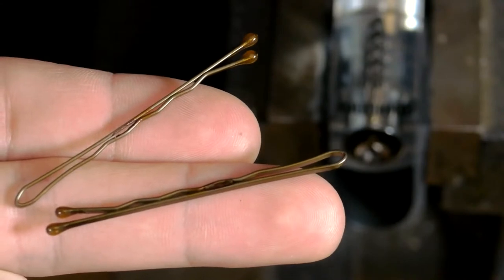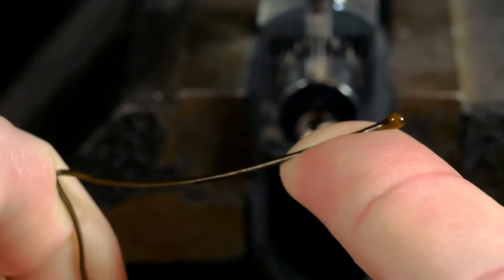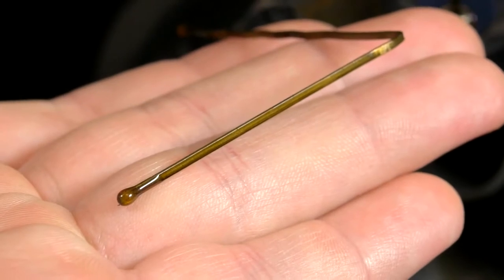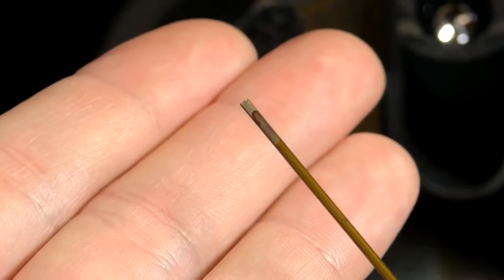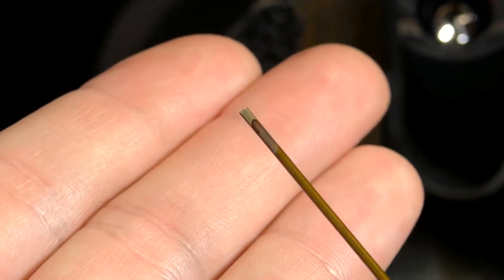To begin with the pick, a hairpin is bent open until the ends are about 90 degrees apart. The bit of rubber on the straight side of the pin needs to be removed, which is pretty easily done with your teeth if there are no tools present.